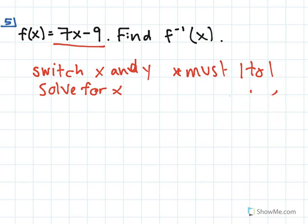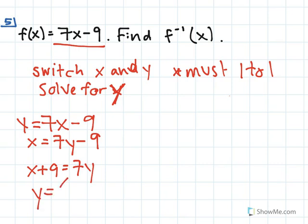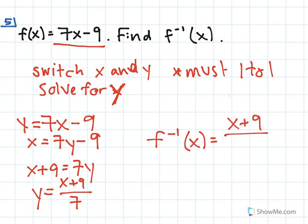Let's go ahead and find our inverse. We start with y equals 7x minus 9. We switch x and y to get x equals 7y minus 9. Adding 9 to both sides gives x plus 9 equals 7y, and dividing gives y equals (x plus 9) over 7. So f inverse of x equals (x plus 9) divided by 7.